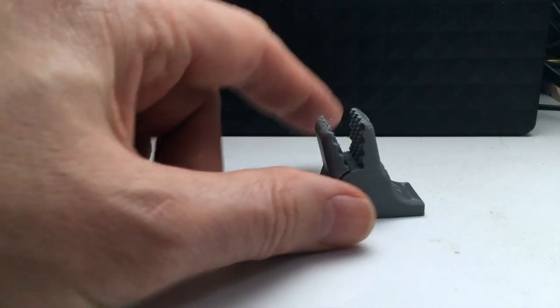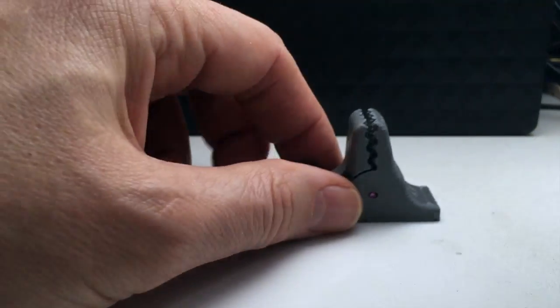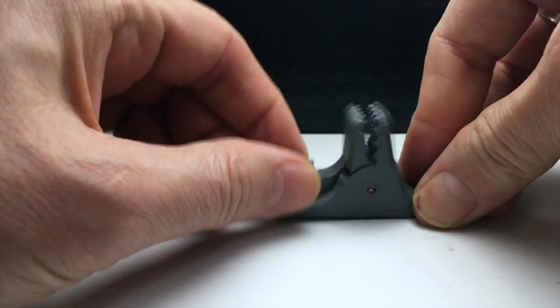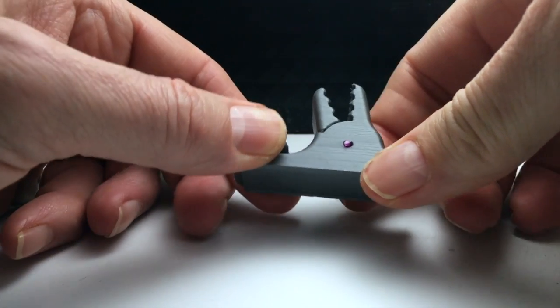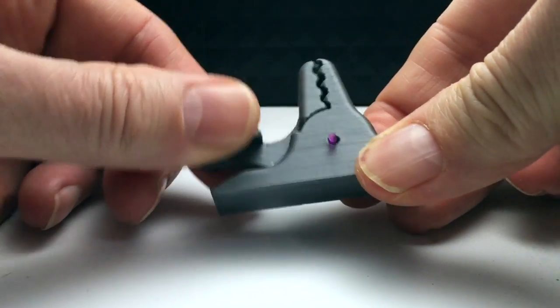So I iterated and added more cross-cut teeth. That should hold the wires from any angle. Again, thinking of using the filament as a hinge pin.